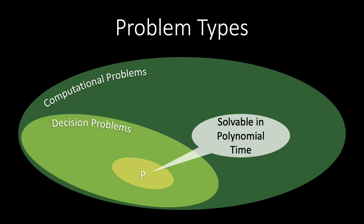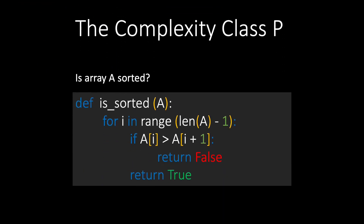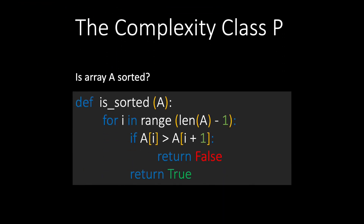The complexity class P is the subset of decision problems that we can solve in polynomial time. All our previous examples of decision problems are in P. To determine if an array is sorted, we iterate over the array and compare neighboring elements. This algorithm takes linear time and is thus clearly polynomial in the size of the input. The other two examples are also solvable in polynomial time.